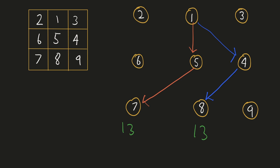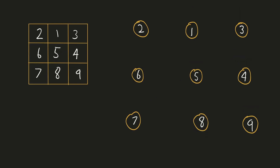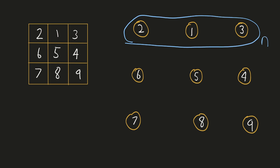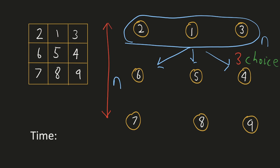To solve this, we could write a recursive logic where we return the sum of the current value and the minimum of the three choices we can make. At the bottom row, since we cannot make any further choice, we directly return its value as the answer. The time complexity of this brute force approach would be 3 raised to the power n for each of the n elements, making it exponential — so we need to optimize it.